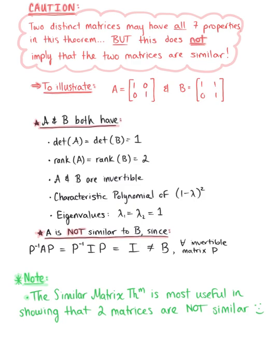So in order to show that two matrices are not similar, all we need to do is show that one of the seven properties of the similar matrix theorem fails to hold.